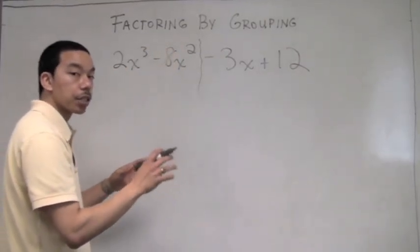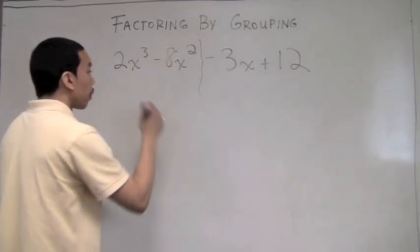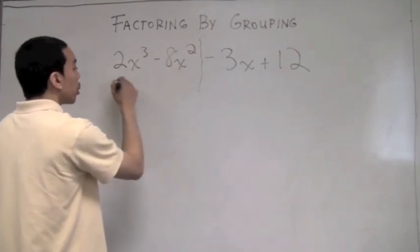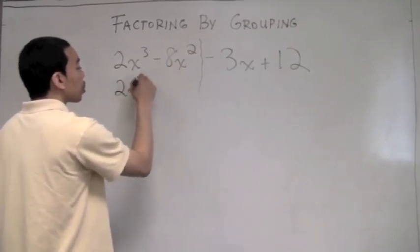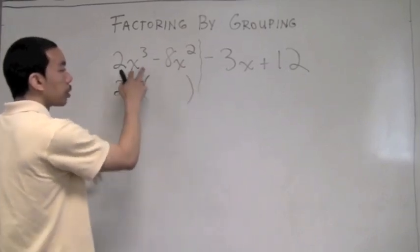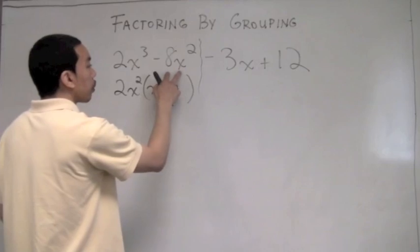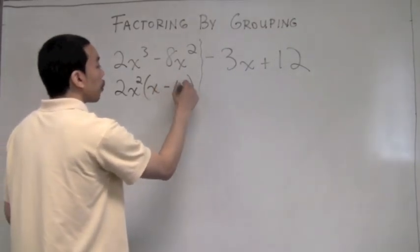So I'll factor each side individually by GCF. The GCF of 2x³ and negative 8x² is 2x². 2x² into 2x³ goes x times. 2x² into negative 8x² goes negative 4 times.